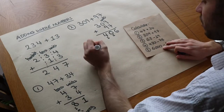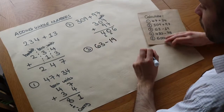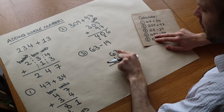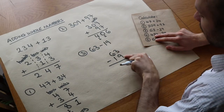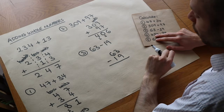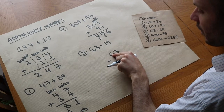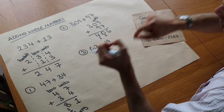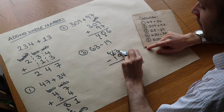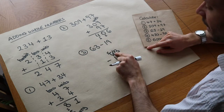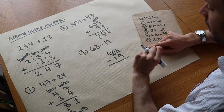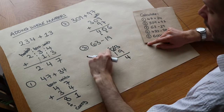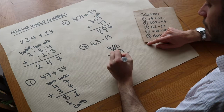Now we've got a subtraction: 63 minus 19. We arrange into columns in exactly the same way. Instead of adding the digits we're subtracting them, so we're doing 3 minus 9. But we can't do 3 minus 9 because that would give a negative number, so we have to borrow a ten from the column to the left. We reduce the tens column by 1 to get 5 tens, and add that freed ten here, making it 13. So we do 13 minus 9, which is 4. In the tens digit we've got 5 minus 1, which is 4. So we have 44.